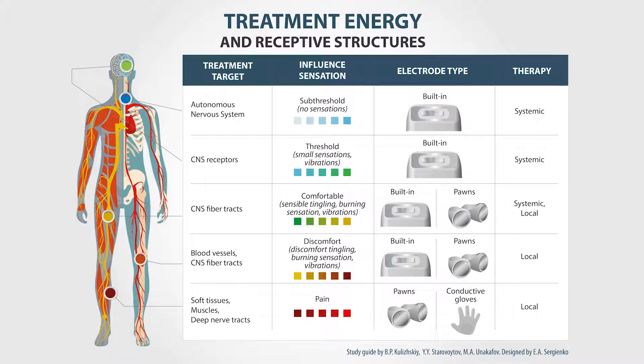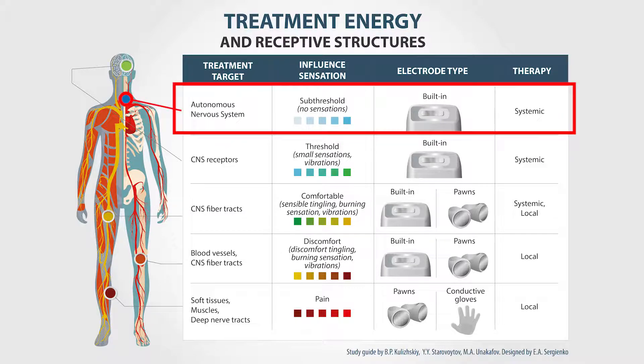Depending on the treatment energy level, we can focus the influence on the different targets, the different structures of the human body. When we use the sub-threshold level of energy and the influence is barely noticeable, the main receptive structure is the autonomous nervous system — basically the main structure that manages the human body.